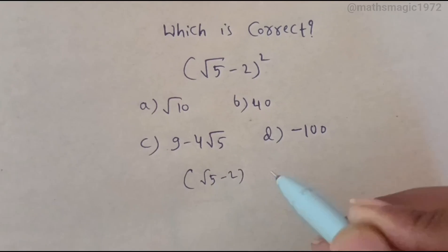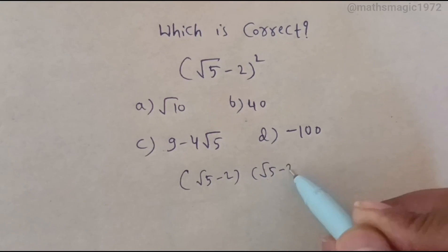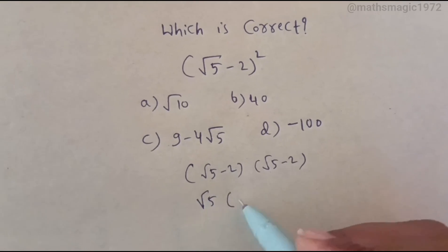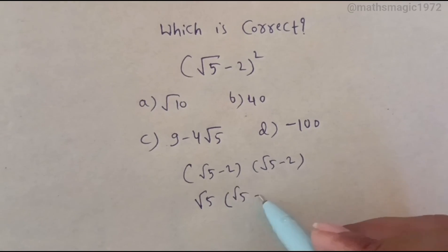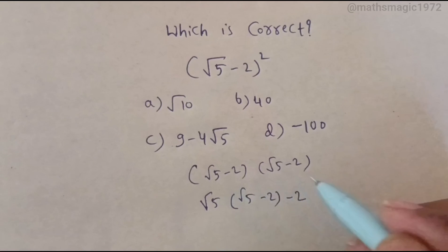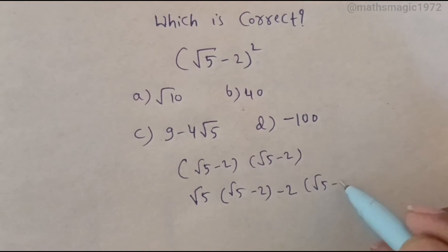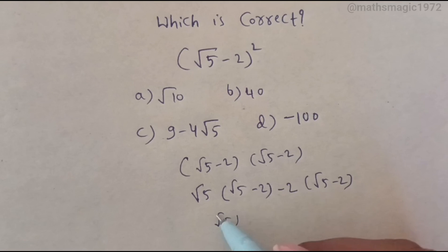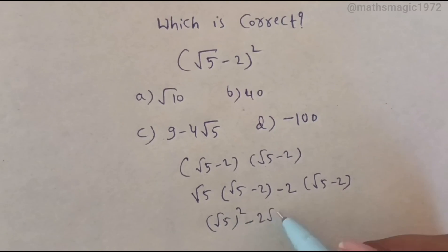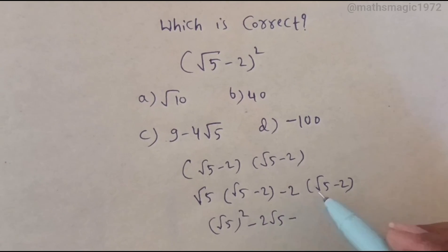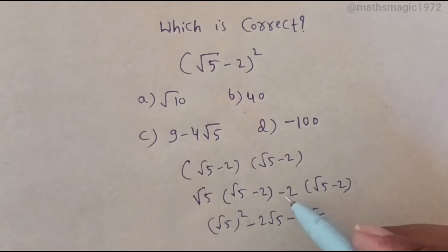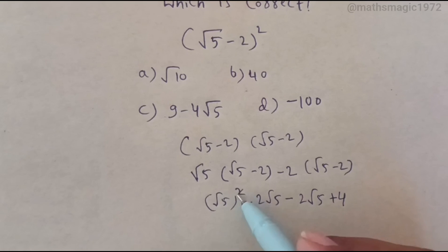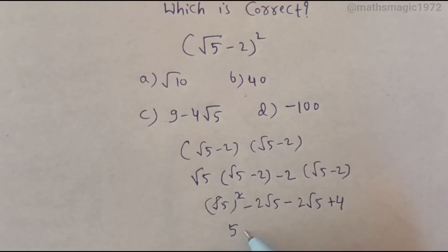So (√5 - 2) times (√5 - 2). First, take √5 and multiply: √5 into √5 gives √5 whole square, then minus 2 into √5 gives 2√5, then minus 2 into √5 gives another 2√5, and minus 2 into minus 2 gives plus 4. Here, √5 squared gives 5.